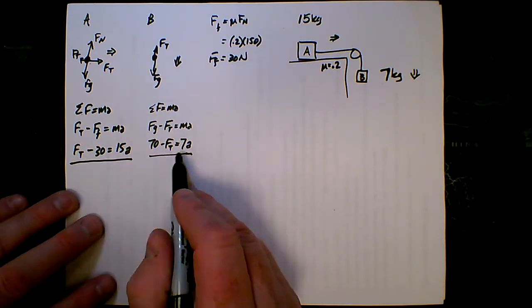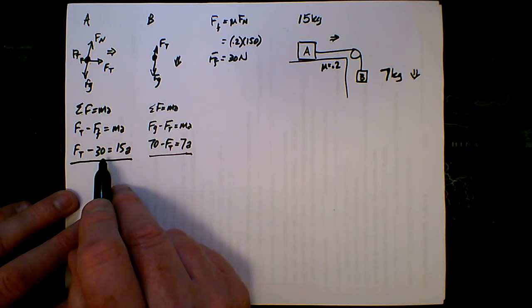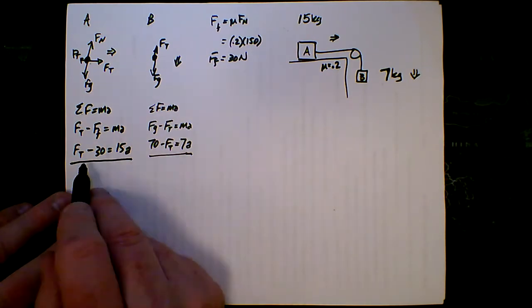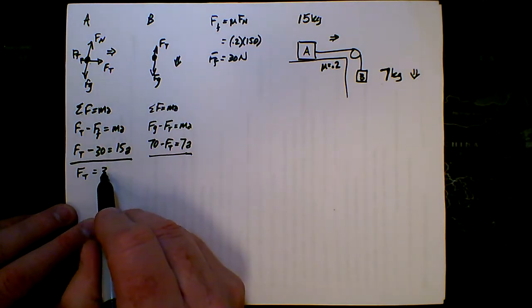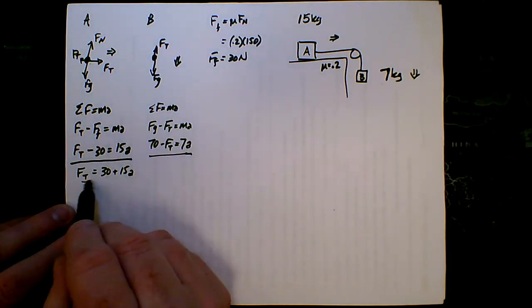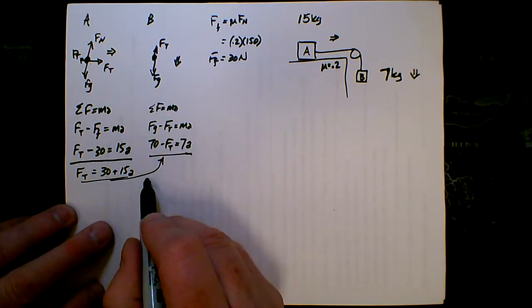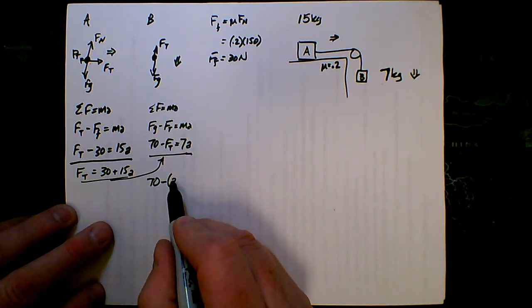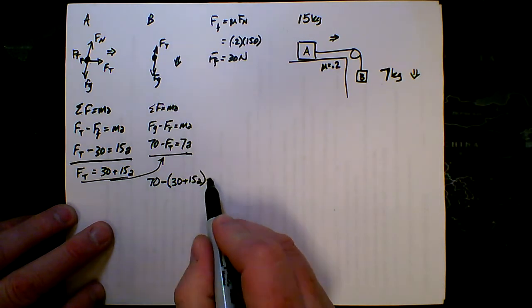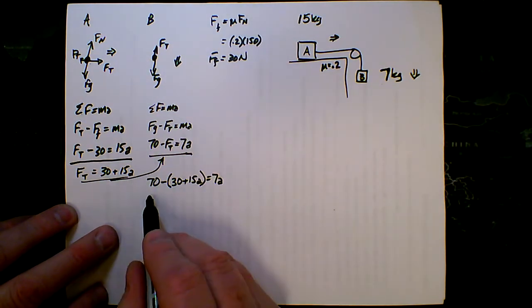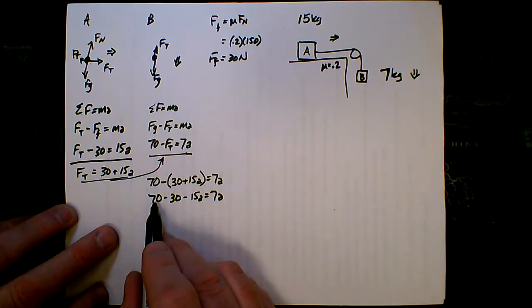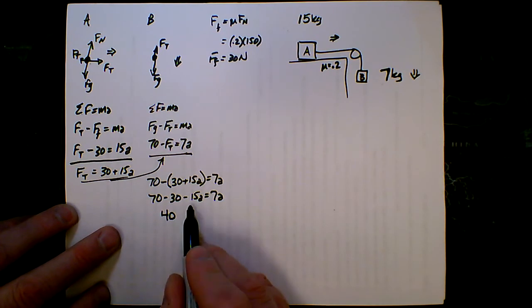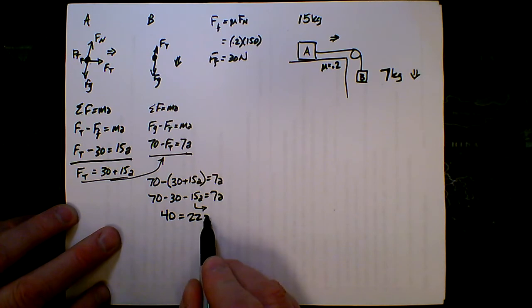So what I need to do at this point is to solve one of these equations for the tension, plug it into the other one. I'm going to go ahead and solve the left equation here. I can see the tension by just adding 30 to both sides is equal to 30 plus 15a. So I'm going to take that and plug it in here for the tension. So it's 70 minus the quantity, 30 plus 15a equals 7a. Let's go ahead and distribute that negative. 70 minus 30 minus 15a equals 7a. Now I can combine my like terms, 70 minus 30 is 40. Let's add 15a to both sides. So 40 equals 22 times a.